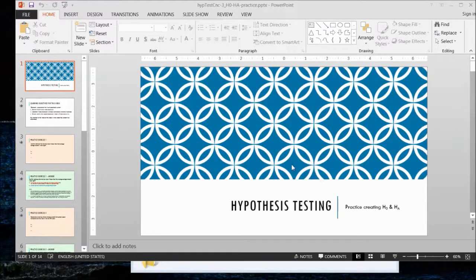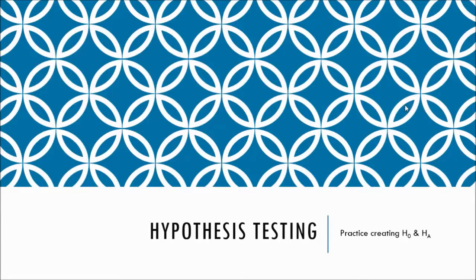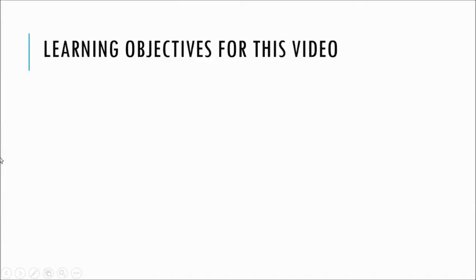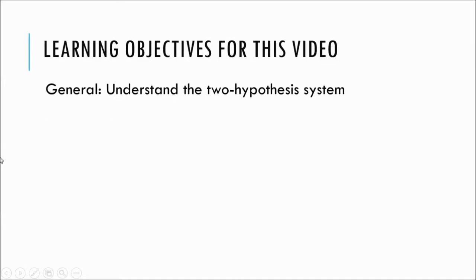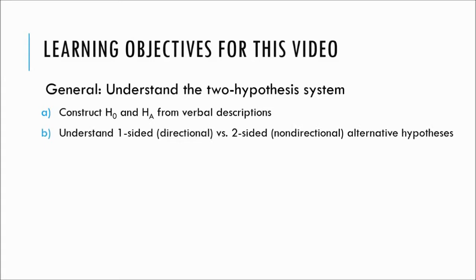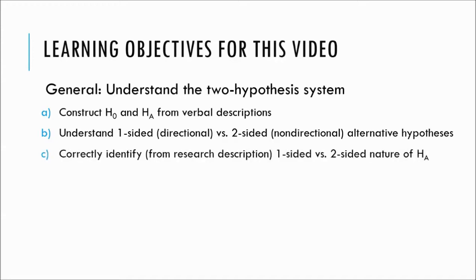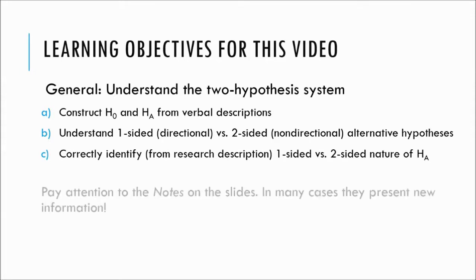This video is just some practice identifying or creating null and alternative hypotheses. The objectives are to understand the two-hypothesis system, learn how to construct null and alternative hypotheses from verbal or written descriptions, and to understand one-sided versus two-sided alternative hypotheses. The null hypothesis is always non-directional, but the alternative can be either one.